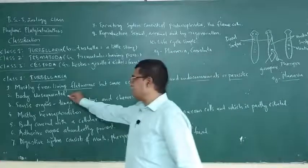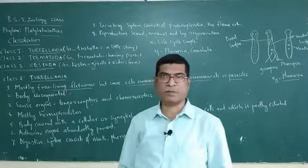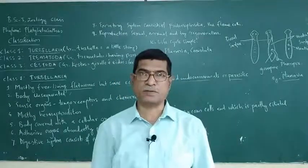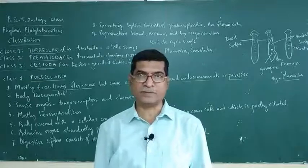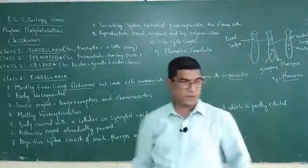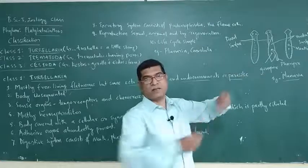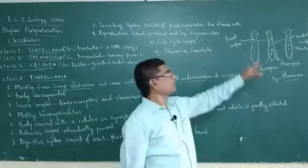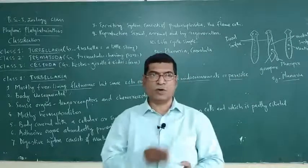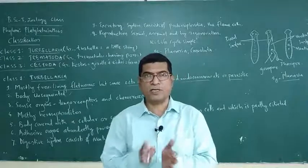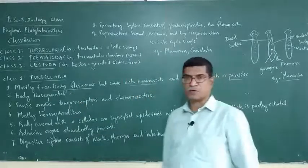The body is unsegmented — not segmented. Segmentation of the body starts from Phylum Annelida onwards, but here the worm is not segmented, it is unsegmented. There is no segmentation, no partition, no occurrence of subunits. Such type of body organization is not there in flatworms.